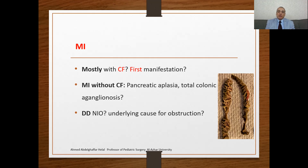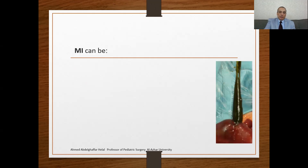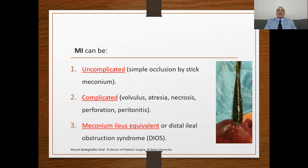The differential diagnosis is usually based on other causes of neonatal intestinal obstruction, where there is an underlying cause — maybe atresia, maybe Hirschsprung, maybe imperforate anus, maybe volvulus, malrotation, or ischemia. However, in meconium disease or meconium ileus, the obstruction is related to the meconium itself. Meconium ileus can be uncomplicated — simple occlusion by sticky adhesive meconium — or maybe complicated, presenting with volvulus, atresia, necrosis, perforations, and peritonitis. Also, we may have what is called meconium equivalent or distal ileal obstruction syndrome.